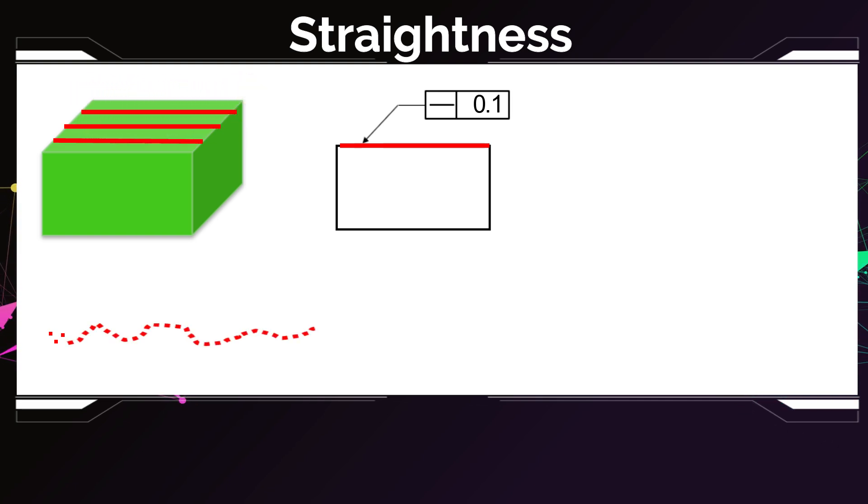And the straightness tolerance specification means I have two lines, and any point from the measured line has to fall between these two lines. The distance between these two lines is the width of the tolerance zone, the 0.1 in this case.